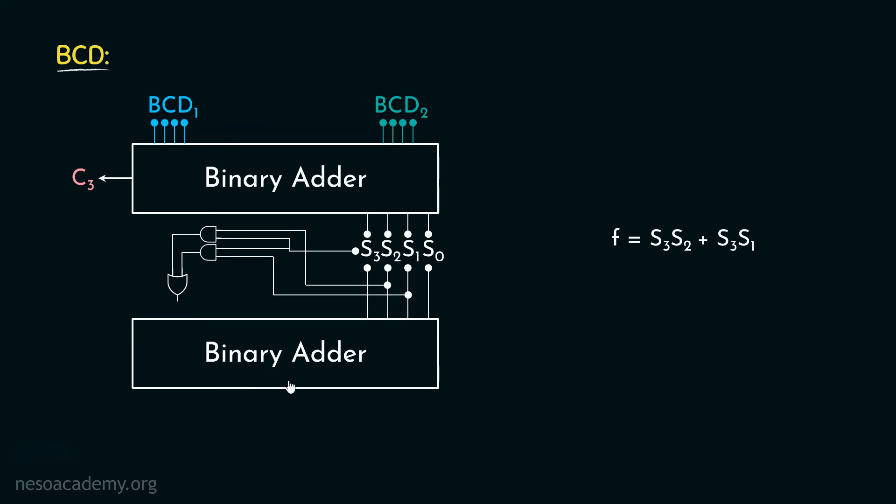Now in this particular binary adder, in one of the inputs, we are feeding the sum. Now say the second input is N, that is N3, N2, N1 and N0. This will help us with the correction. Now if you remember, the correction pattern was 0110 or the pattern of 6. Keeping that in mind, we are feeding N3 with 0 and also N0 with 0.